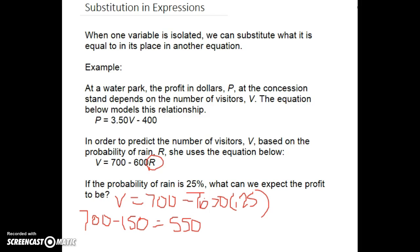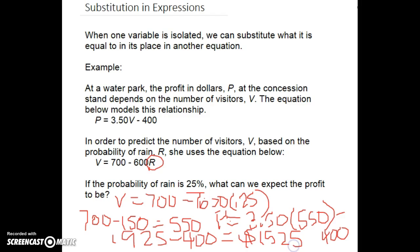So I can expect 550 visitors when the chance of rain is 25%. Now I can use that information to plug in and figure out what my profit is. So profit is going to be 3.50 times 550 visitors minus 400. So 3.50 times 550 I get 1,925 minus 400, which leaves me with $1,525 as my profit.